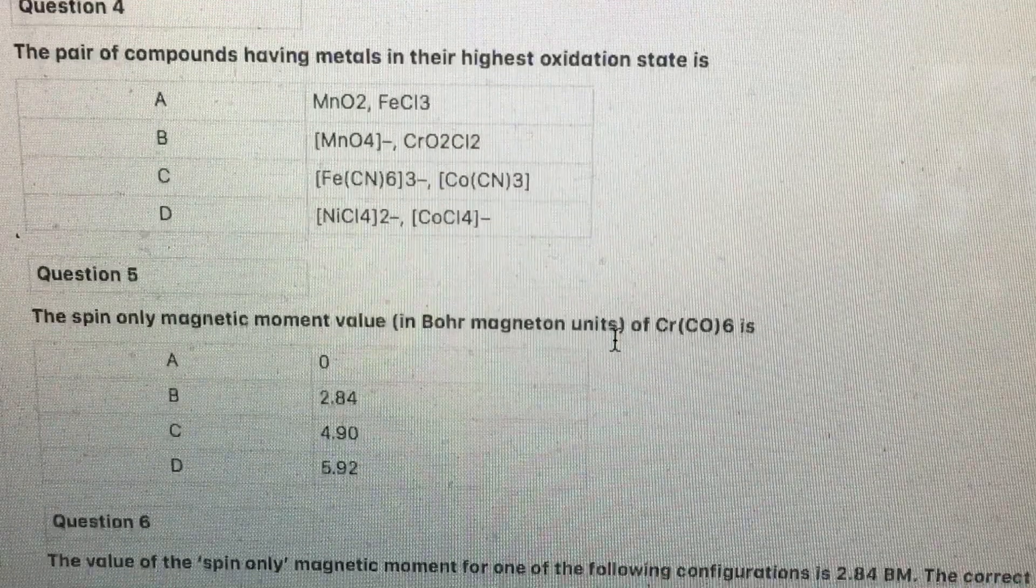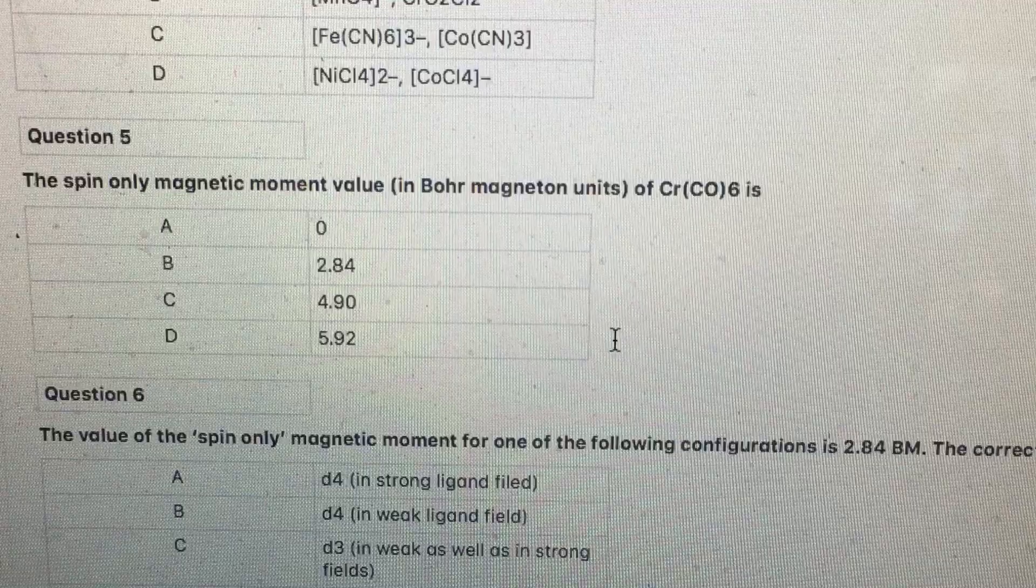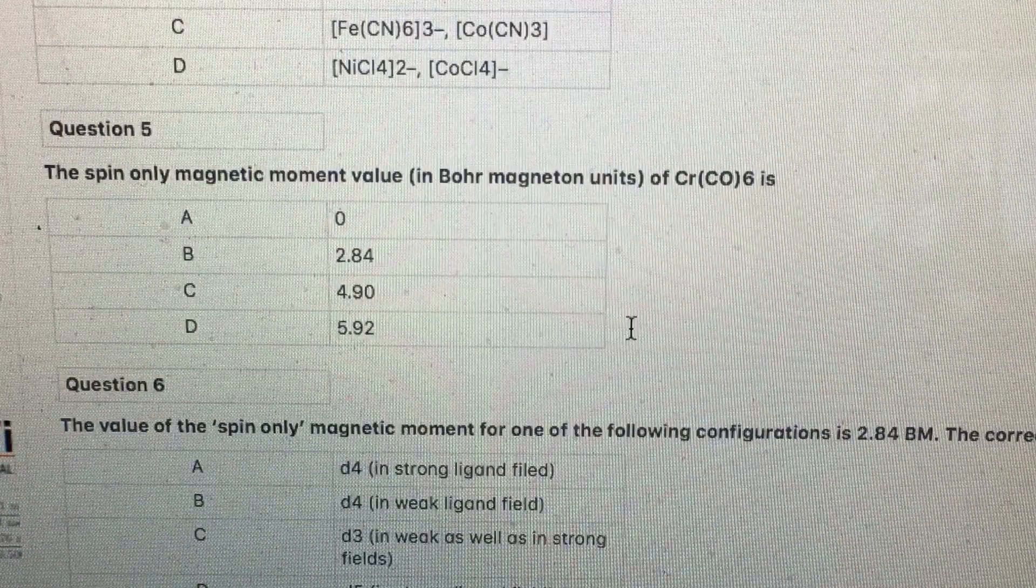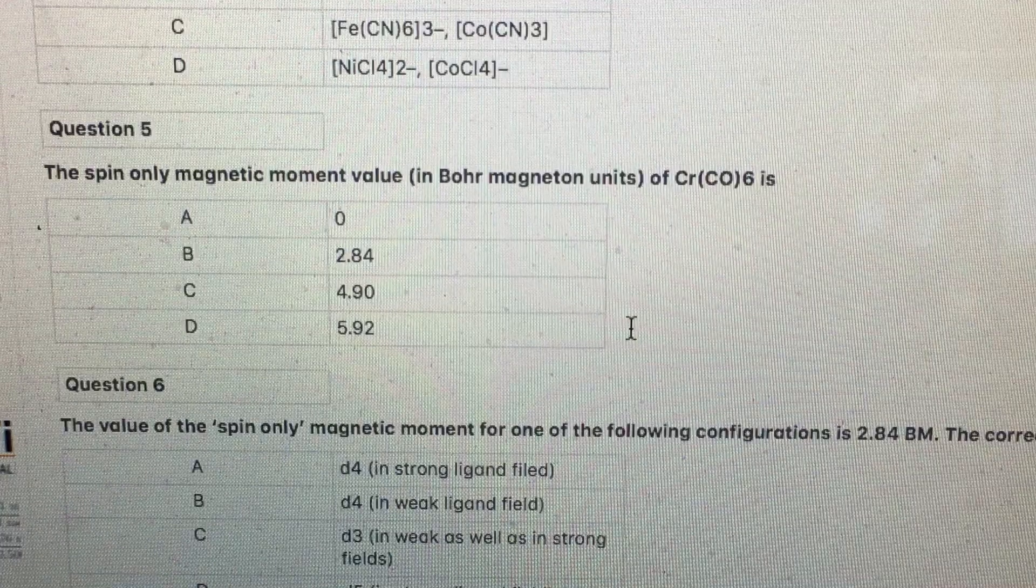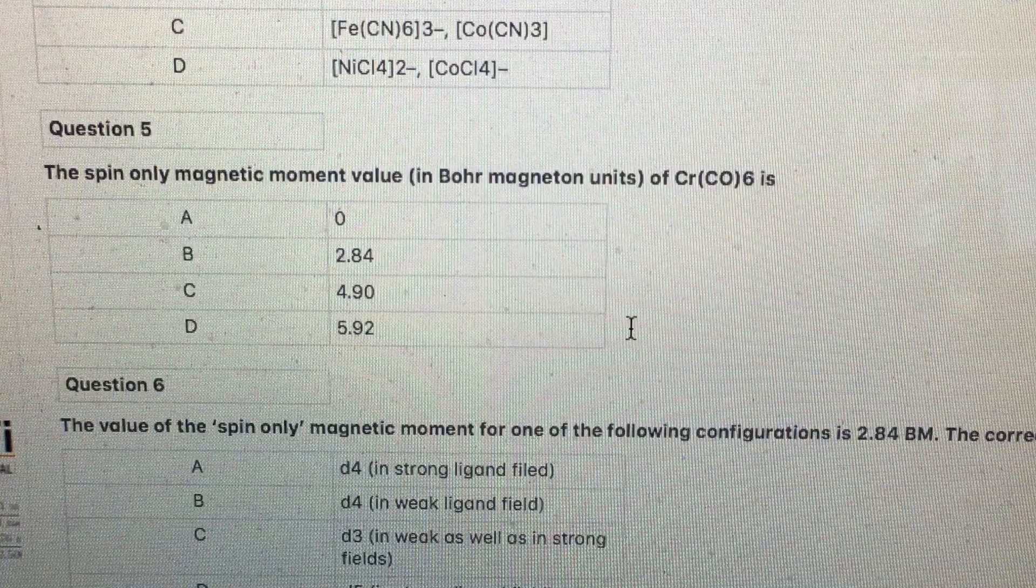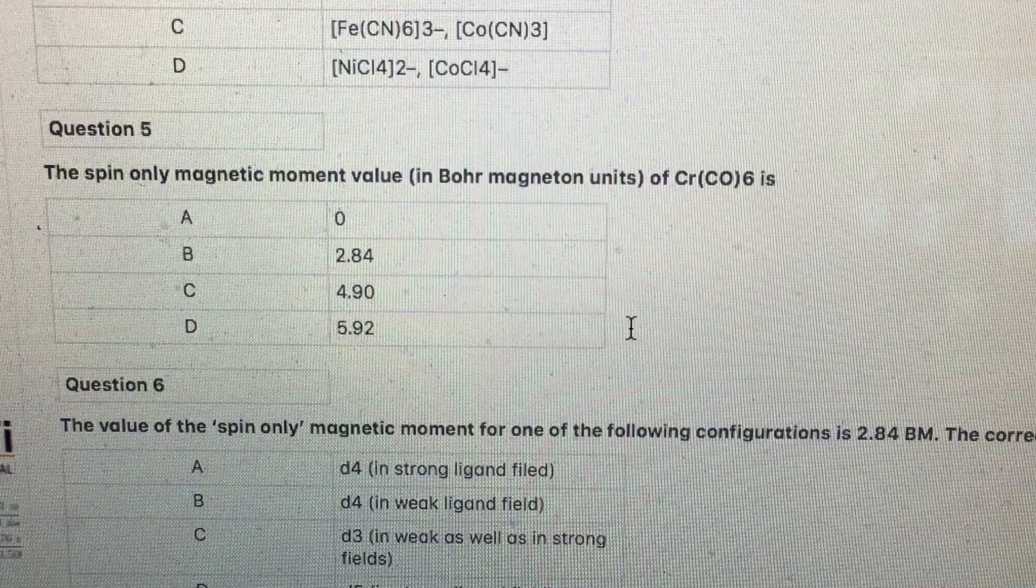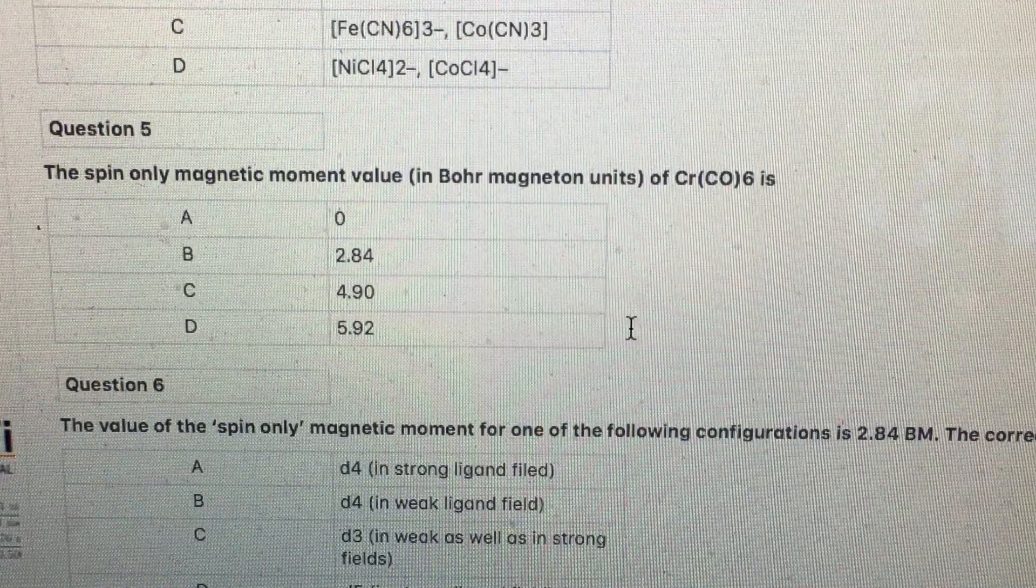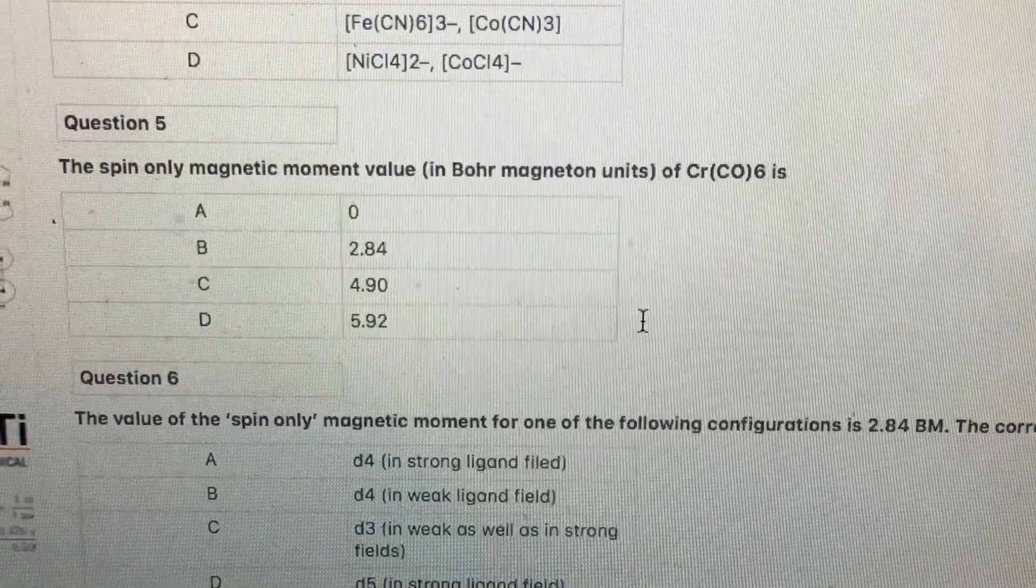The spin-only magnetic moment value of Cr(CO)6: CO is a strong field ligand. The chromium configuration 3d5 4s1 changes to 3d6 in t2g orbitals. Therefore, t2g6 makes no unpaired electrons. Hence, it is diamagnetic. Answer is A.